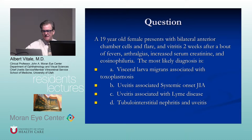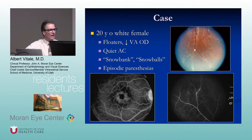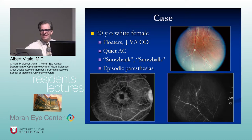About 11% of patients with TINU will require immunomodulation. Moving anatomically in the uveitis world from the front to the middle of the eye: a young woman presents with floaters, snowbanks, snowballs, and episodic paresthesias — so-called intermediate uveitis.